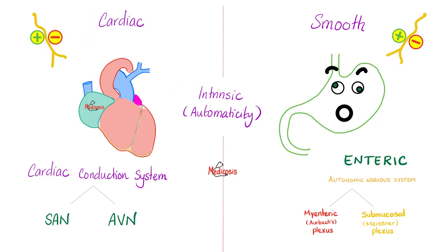Cardiac muscles have automaticity in the SA node and AV node, so even if the nerves connected to the heart are cut, the heart can still contract and beat on its own. Similarly, the gastrointestinal tract has an enteric nervous system — even if you cut the vagus and the splanchnic nerves, your gut will still contract thanks to the enteric nervous system, which is made of the myenteric plexus for motility and the submucosal plexus for secretions. The sympathetic and parasympathetic are coordinators — they boost or decrease contraction and secretion, but they do not initiate contraction because it's intrinsic.